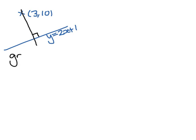The gradient of the line equals 2, so the perpendicular line has a gradient which is the negative reciprocal of that, which is minus a half.